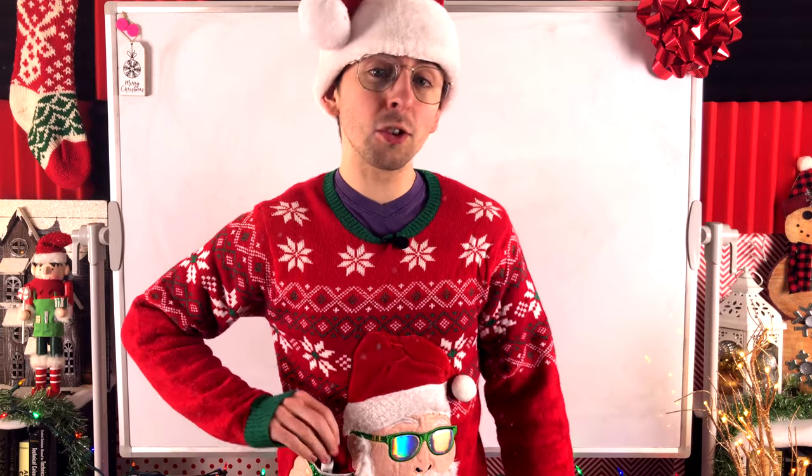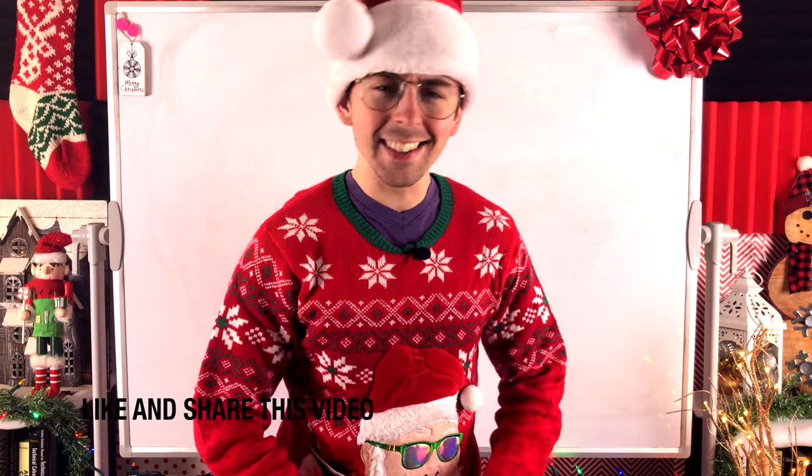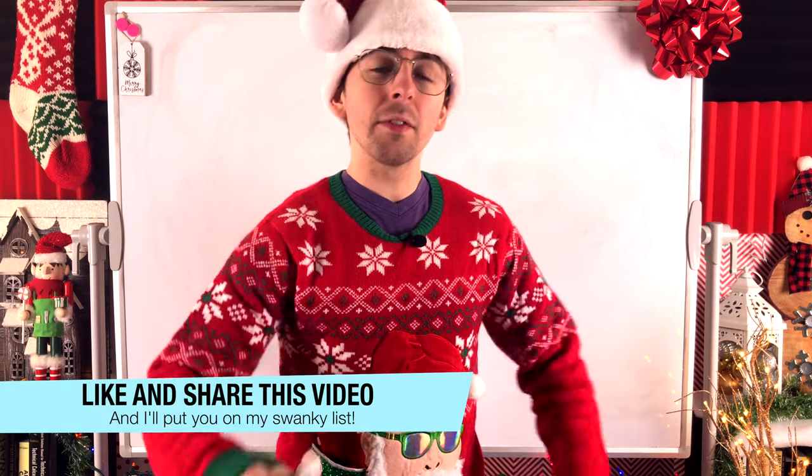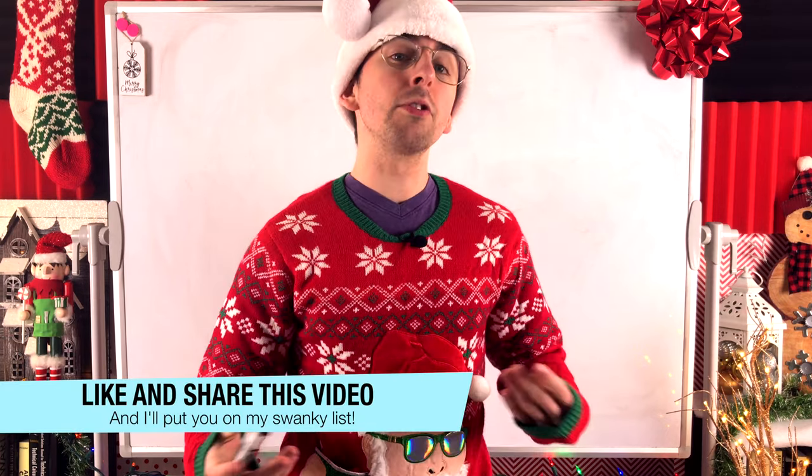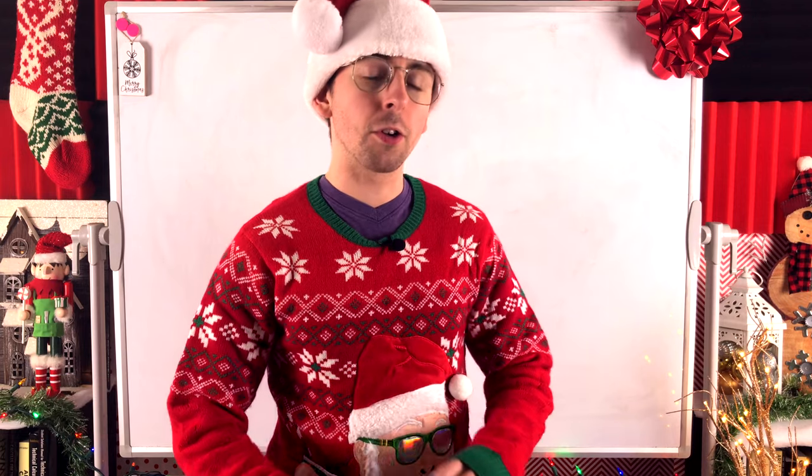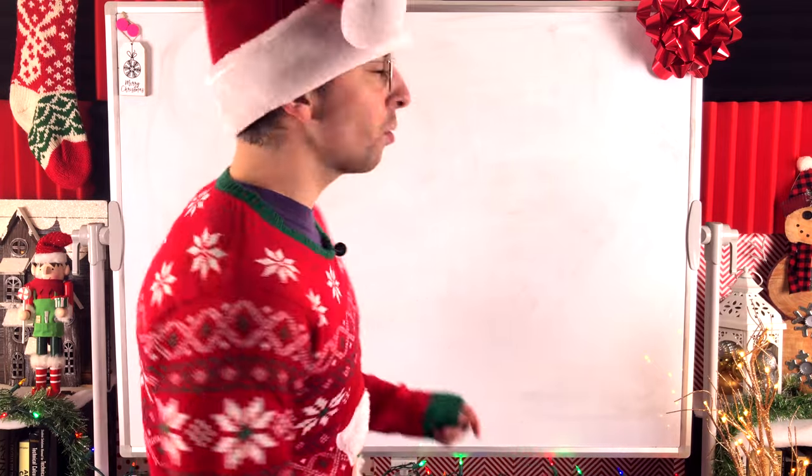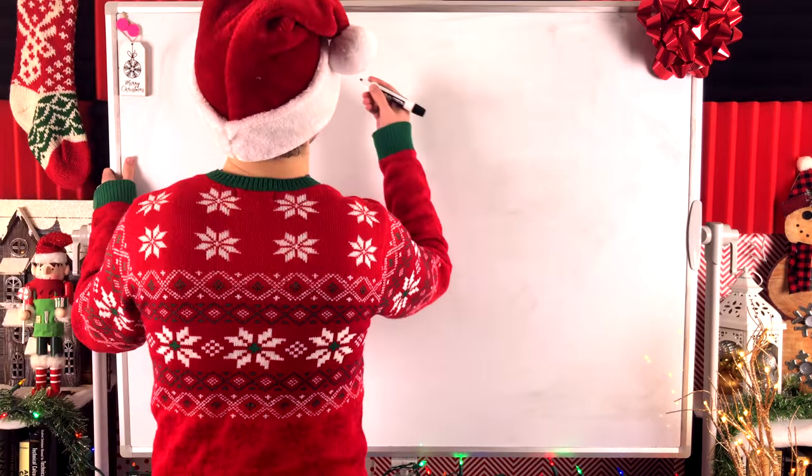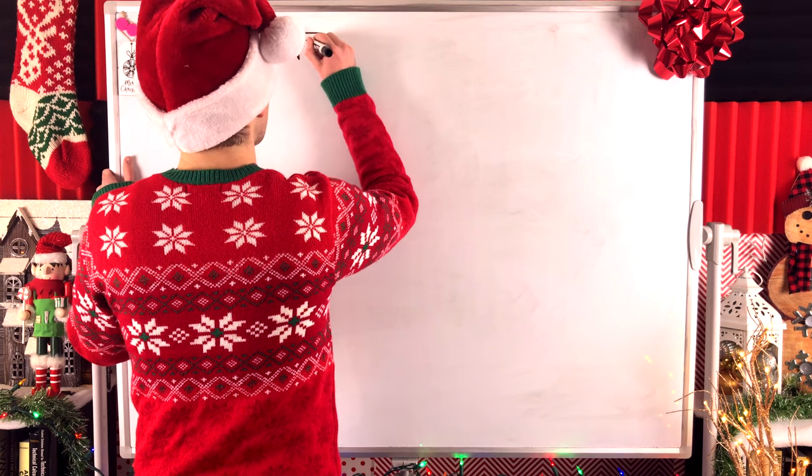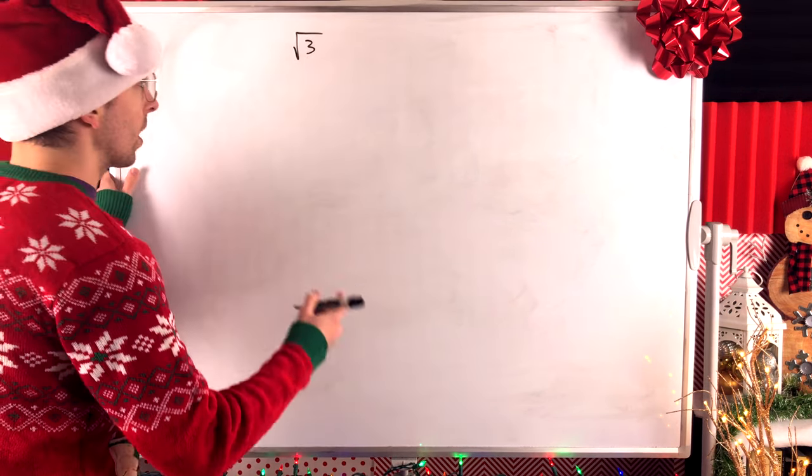But today, we'll be proving that the square root of 3 is indeed irrational. You might have seen the common proof that the square root of 2 is irrational. It's one of the most famous contradiction proofs of all time. Turns out, we can use basically the same technique to prove that the square root of 3 is also irrational. Pretty sweet. So let's go through this cute and fun little proof on this chilly December morning.